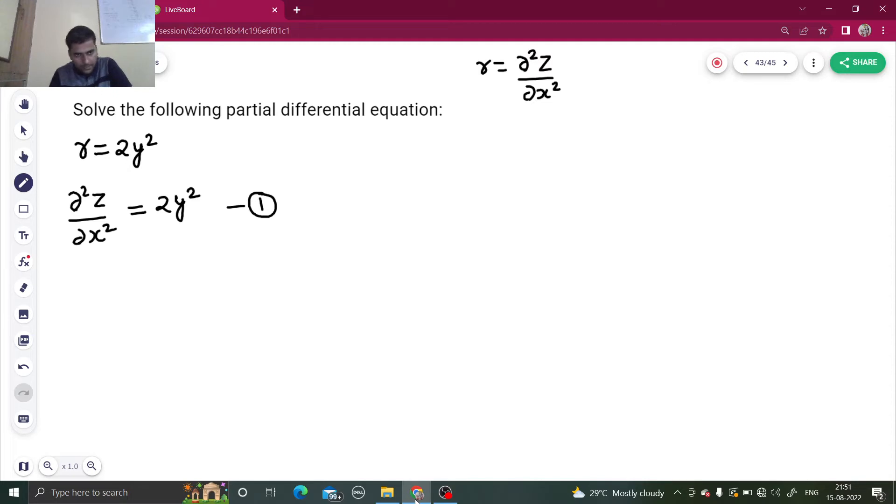Because in order to remove del by del x, we have to integrate. Because integration is the reverse process of differentiation. So integrate with respect to x taking y as constant. We will get del z by del x upon first integration.